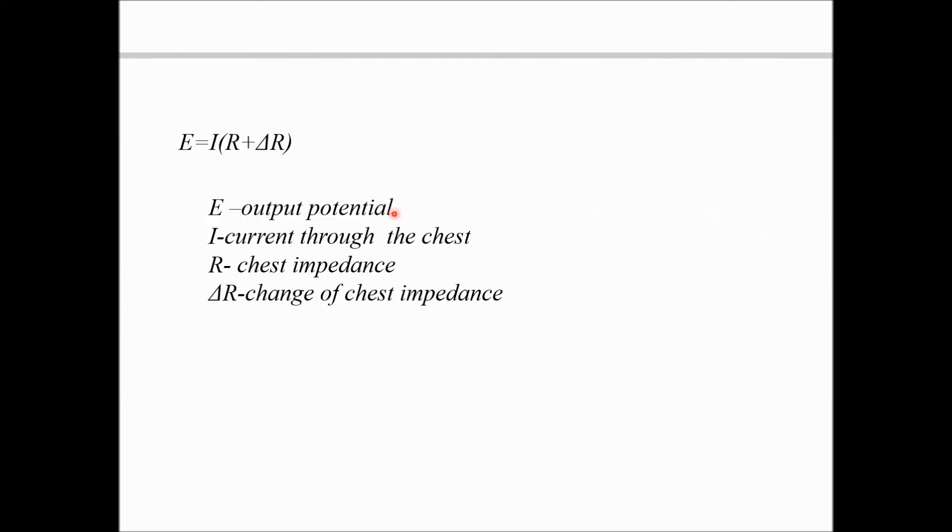The equation is given as E is equal to I into R plus delta R, where E is the output potential, I is the current through chest, R is the chest impedance, and delta R is the change in chest impedance.